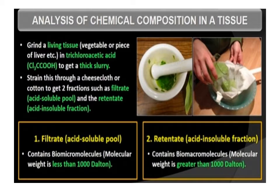To understand the types of organic compounds found in living organisms, one has to perform a chemical analysis. Take any living tissue — a vegetable or a piece of liver — and grind it in trichloroacetic acid using a mortar and pestle. We obtain a thick slurry, which is strained through a cheesecloth or cotton cloth. We would obtain two fractions: one is called the filtrate or acid-soluble pool, and the second is the retentate or the acid-insoluble fraction. Thousands of organic compounds are found in the acid-soluble pool. Extraction of compounds is done, and then the extraction is subjected to various separation techniques until one has separated a compound from all other compounds.